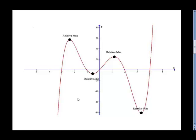Now, let's think about what's going on at each of these points. If we think about drawing tangent lines at each of these points, our tangent lines would be perfectly horizontal.